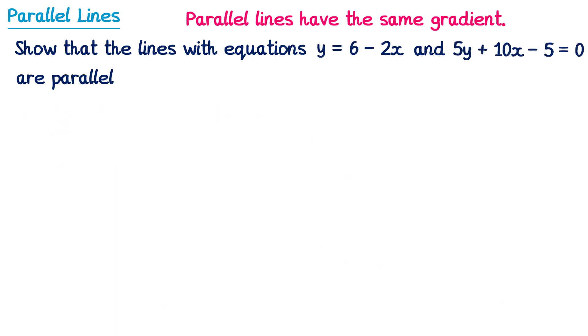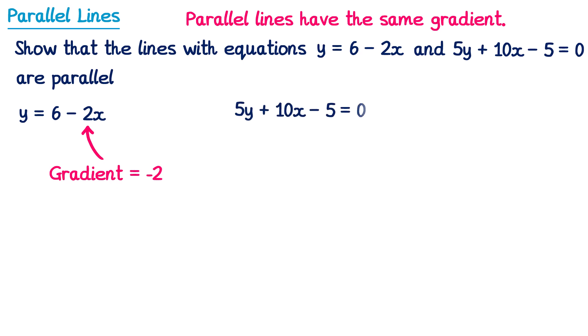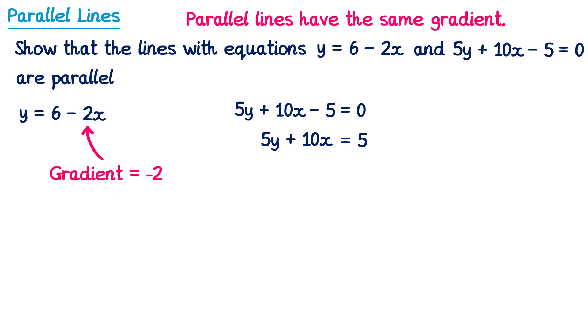Now let's try a second example with different equations, still trying to show they are parallel. The first equation has a gradient of negative 2, which is the number in front of the x. The second equation requires some rearrangement. First add 5 to both sides: on the left this cancels the negative 5, leaving 5y plus 10x, and on the right 0 plus 5 is 5. Then subtract 10x from both sides: the positive 10x cancels, leaving 5y equals 5 minus 10x.